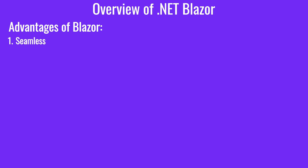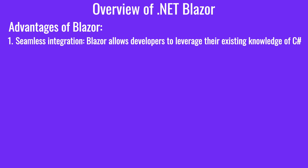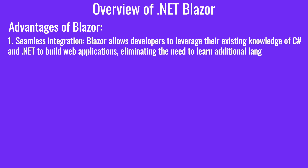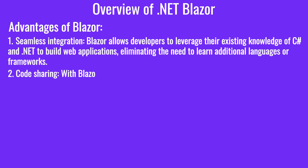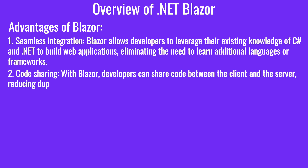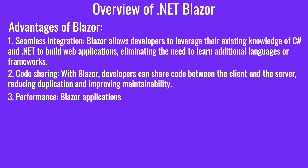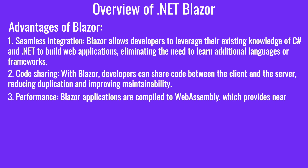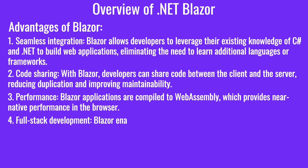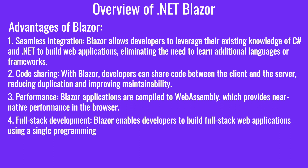Advantages of Blazor: Number 1, seamless integration — Blazor allows developers to leverage their existing knowledge of C# and .NET to build web applications, eliminating the need to learn additional languages or frameworks. Number 2, code sharing — developers can share code between the client and the server, reducing duplication and improving maintainability. Number 3, performance — Blazor applications are compiled to WebAssembly, which provides near-native performance in the browser. Number 4, full-stack development — Blazor enables developers to build full-stack web applications using a single programming language, resulting in improved productivity.